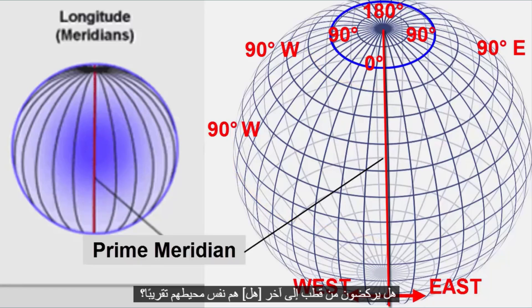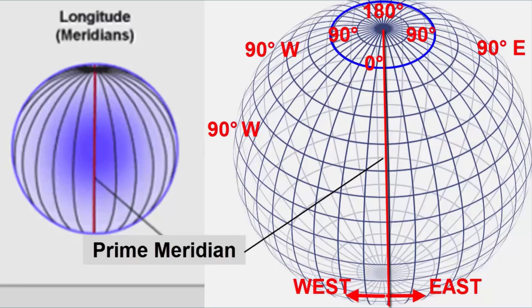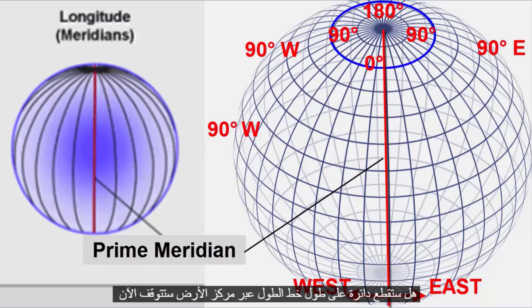Are longitude lines parallel? Do they run from pole to pole? Are they roughly the same circumference? Would a circle cut along a longitude line cut through the center of the earth? Pause and consider these questions.